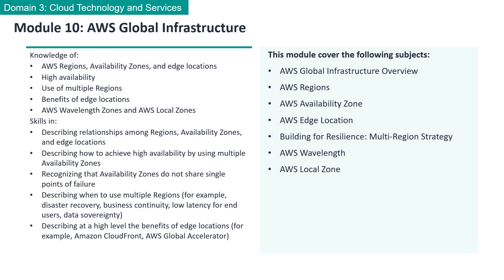Welcome to Module 10, AWS Global Infrastructure. In this module, we will cover the following subjects: AWS Global Infrastructure Overview, AWS Regions, AWS Availability Zones, AWS Edge Locations, Building for Resilience, Multi-Region Strategy, AWS Wavelength, and AWS Local Zones. Let's get started!